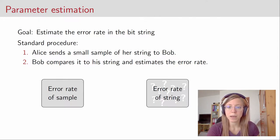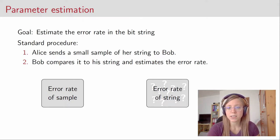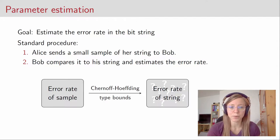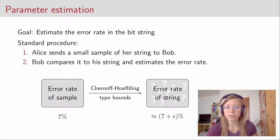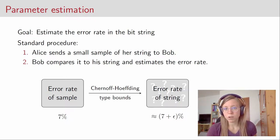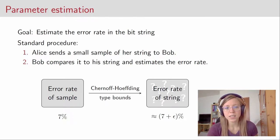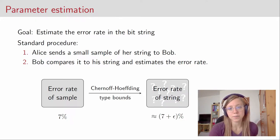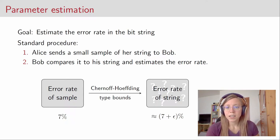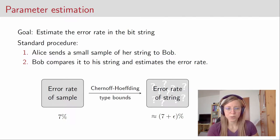To make this intuition mathematically precise, we can use so-called Chernoff-Hoeffding type bounds. They say roughly that if the error rate of the sample is around seven percent, then the error rate of the remaining bit strings is about seven plus some small epsilon percent with high probability. There are several inequalities we can use, and we want to look closer at one called Serfling's inequality.